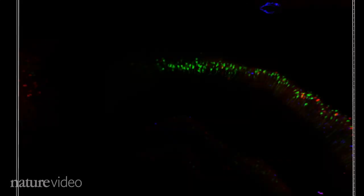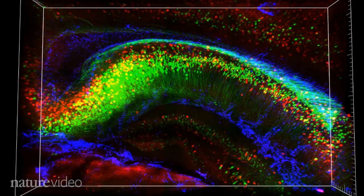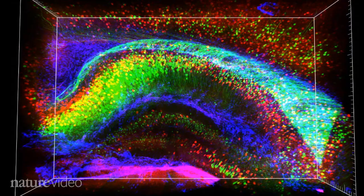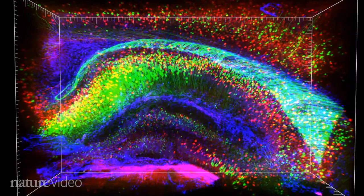In this one millimeter block of hippocampus, excitatory neurons are green, inhibitory neurons are red, and cells called astrocytes are blue.